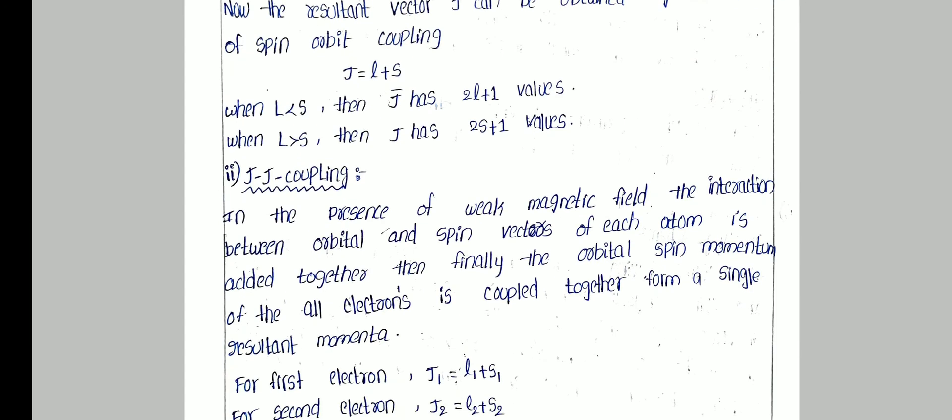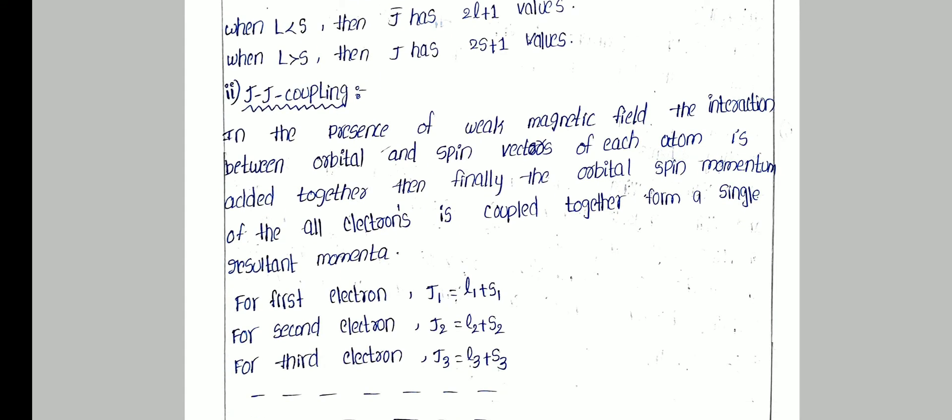The second coupling is JJ coupling. In JJ coupling, in the presence of a weak magnetic field, the interaction between the orbital and spin vectors of each electron is added together. Then the orbital and spin momenta of all electrons are coupled to form a single resultant momenta.